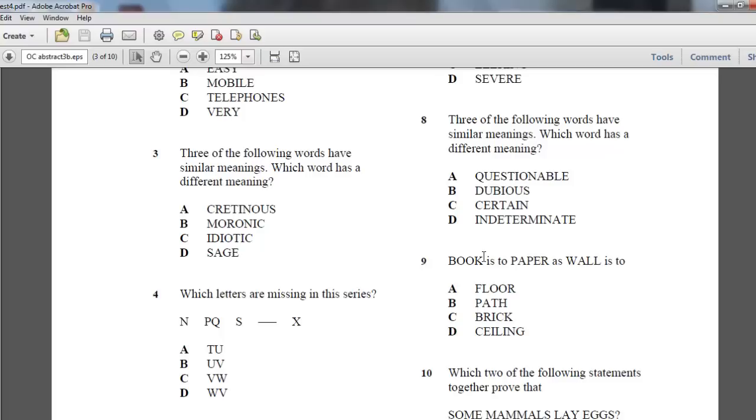The easiest way to approach this, especially when they have very difficult words that you don't know, is process of elimination. I would look at the two easiest words: questionable and certain. We know that questionable is definitely different from certain, so we've got two opposing ones there. Because three words have similar meanings, we only need one more word to have a similar meaning, and then we can isolate the different meaning word.